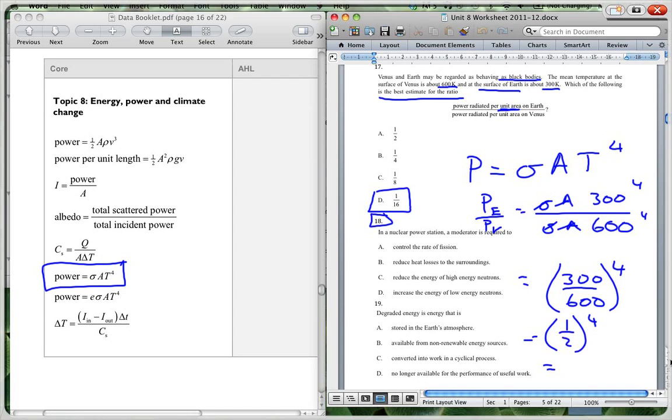Question 18. In a nuclear power station, a moderator is required to reduce the energy of high-energy neutrons. The moderator slows down the neutrons because the neutrons are moving so fast, they tend not to interact with other nuclei and therefore will not continue the reaction. And so your moderator actually slows them down so that they can interact. Question 19. Degraded energy is energy no longer available for performance of useful work. When the energy is degraded, you can no longer use that energy to make electricity or to turn it into some other form of energy that we can use.